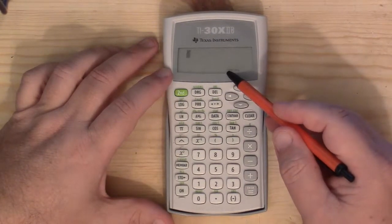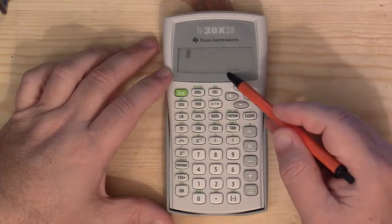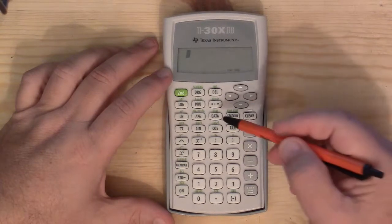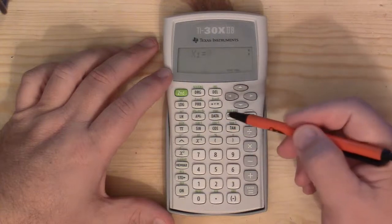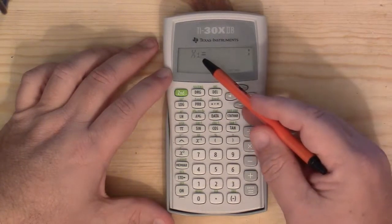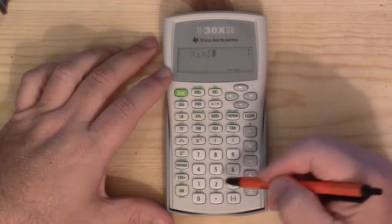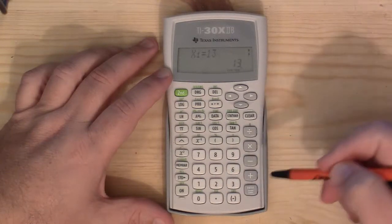You should see down at the bottom it now says stat. So that tells us this is in stat mode. Press my data option. It'll come up and ask me for X1. I'll put in my first X value. Do 13 and then press equals.